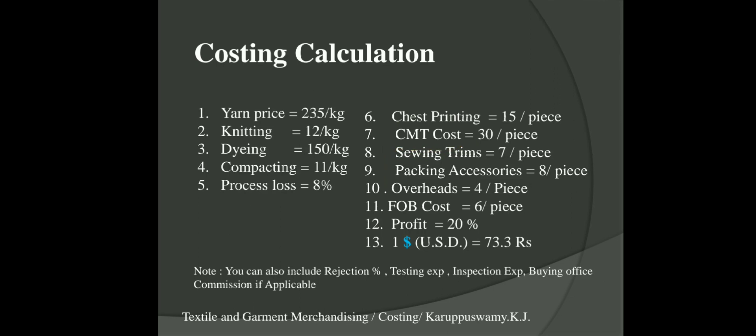CMT includes cutting cost, trimming cost, sewing cost, and packing. You also add the cost of sewing trims — sewing threads, labels, buttons — these items come under sewing trims. Packing accessories include carton box, poly bag, size wrapper, size sticker, and price tag — everything comes under packing accessories.